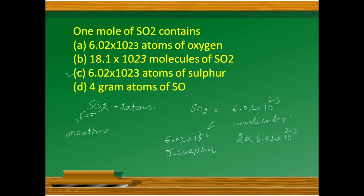In sulfur dioxide, one molecule always has one atom of sulfur and two atoms of oxygen. If we talk about one mole, we will talk about 6.02×10²³ molecules.